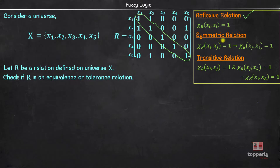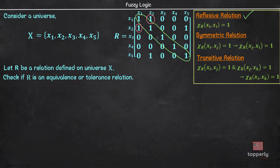Now, let us check for the symmetric property of relation R. Relation R is symmetric if χR(Xi, Xj) = 1 implies χR(Xj, Xi) = 1. The pairs (Xi, Xj) and (Xj, Xi) are diagonally opposite elements, so if one element is 1, we just need to check if its diagonally opposite element is also 1. For example, X5, X2 is 1, therefore X2, X5 should also be 1 — otherwise the condition for symmetric relation is not satisfied. Here, for all elements equal to 1, the diagonally opposite elements are also 1. Since all other elements in this relation are 0, we can say that R is symmetric.